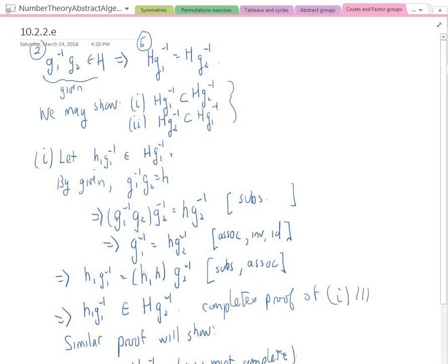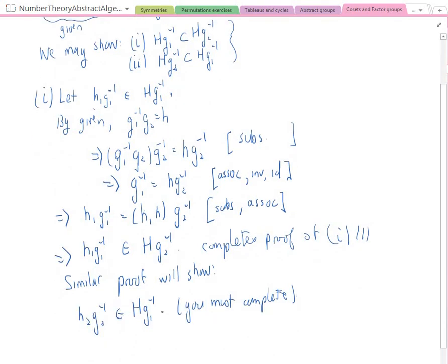Okay, so that's one. That's what I needed there. So a similar proof will show that H2 G2 inverse is in HG1 inverse. You can kind of see that you just replace the ones with twos and vice versa, and you'll get the proof the other way. All right, so that would imply, so that implies that HG2 inverse is contained in HG1 inverse.